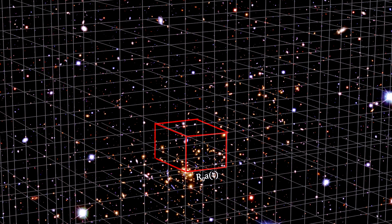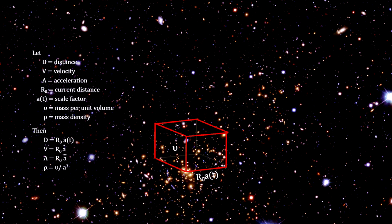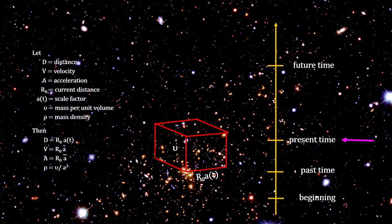Now consider a cube enclosing a volume of space containing some number of galaxies. With our scale factor approach, the amount of matter inside the volume remains the same as the volume increases or decreases.